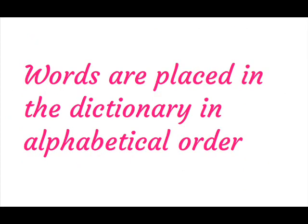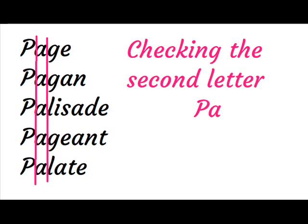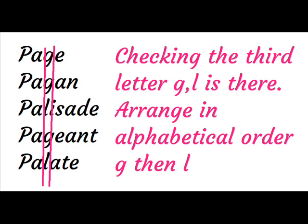Words are placed in the dictionary in alphabetical order. Checking the first letter, we get P. Checking the second letter, we get PA. Checking the third letter, we get G, L, and R.